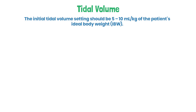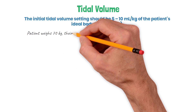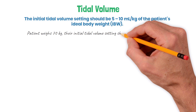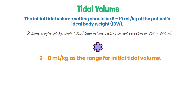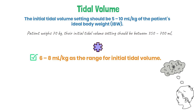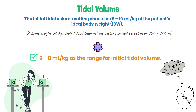The initial tidal volume setting should be 5 to 10 milliliters per kilogram of the patient's ideal body weight. So if a patient weighs 70 kilograms, their initial tidal volume setting should be between 350 to 700 milliliters. Many clinicians use 6 to 8 as the range, which is also correct and more precise, but 5 to 10 makes the calculation easier to do in your head. Use whichever range you feel more comfortable with.